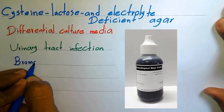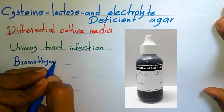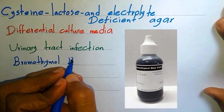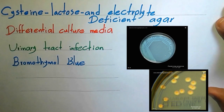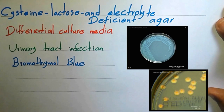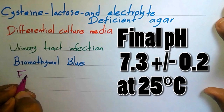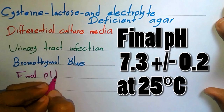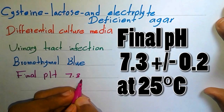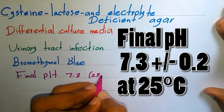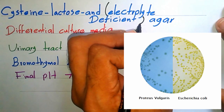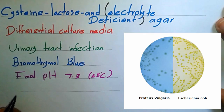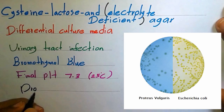Bromothymol blue is the pH indicator used to differentiate lactose fermenters from lactose non-fermenters. Organisms capable of fermenting lactose will lower the pH and change the color of the medium from green to yellow. The final pH of the media is 7.3. Electrolyte sources are reduced in order to minimize the swarming of Proteus species.